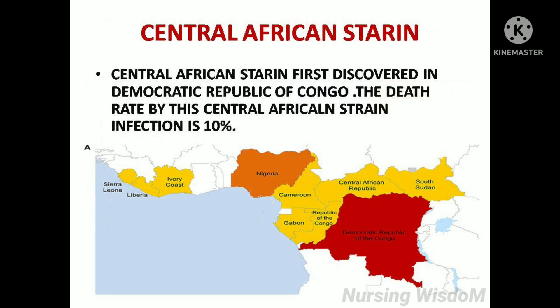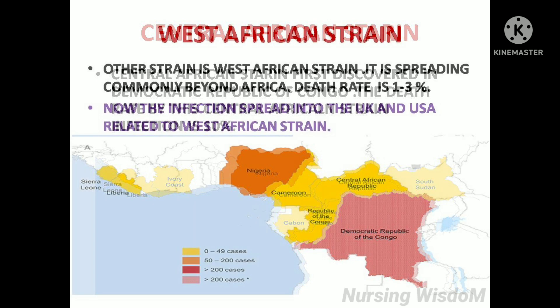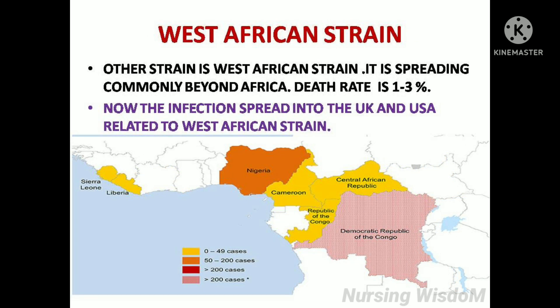The Central African strain was first discovered in the Democratic Republic of Congo, and the death rate from this strain is 10%. The West African strain is the other strain; it is spreading commonly beyond Africa, with a death rate of 1–3%. The current infections spreading into the UK and US are related to the West African strain.